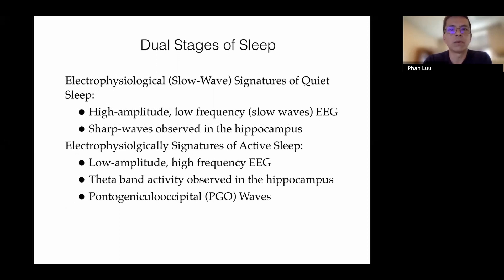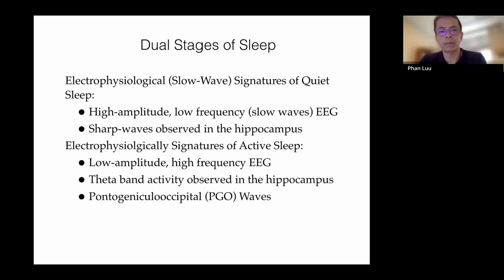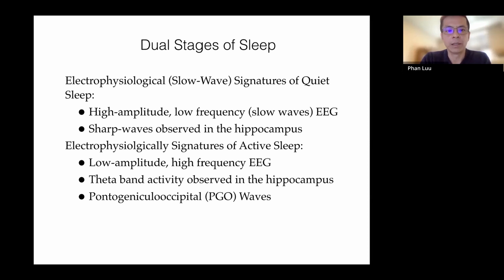The EEG signature of quiet sleep is characterized by high amplitude, low frequency slow waves, and sharp waves observable in the hippocampus and other areas. The signature of active sleep is low amplitude, high frequency EEG, often noted as resembling the wake state EEG. In the hippocampus you can see theta band activity, and if you record from the occipital cortex or thalamus, you'll see large PGO waves.